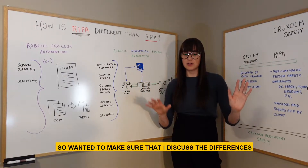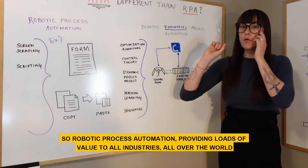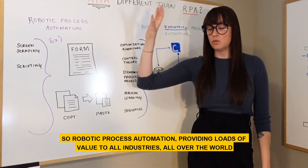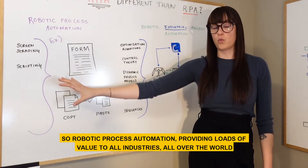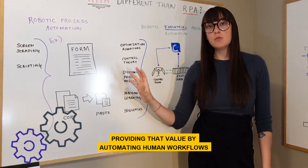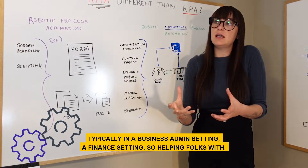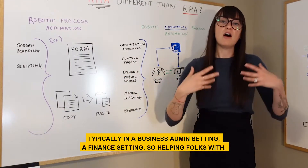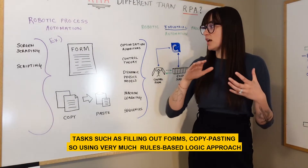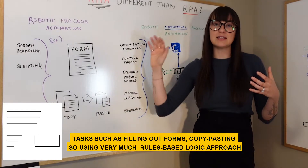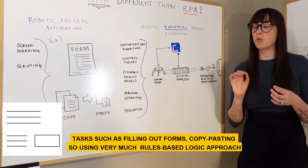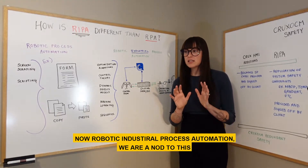Robotic process automation is providing loads of value to all industries all over the world, by automating human workflows — typically in a business admin or finance setting — helping folks with tasks such as filling out forms and copy-pasting. It uses a very much rules-based logic approach.